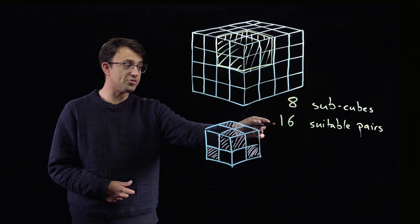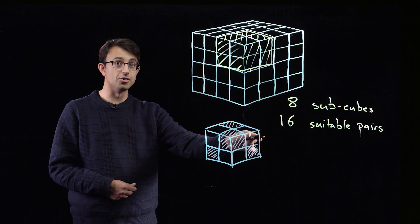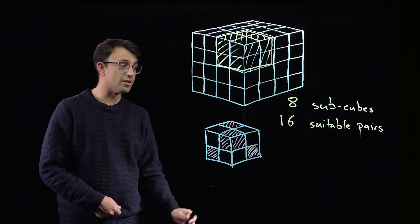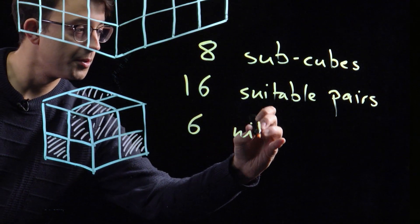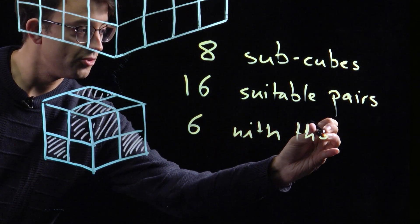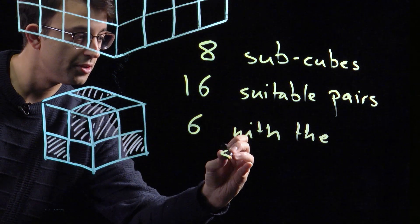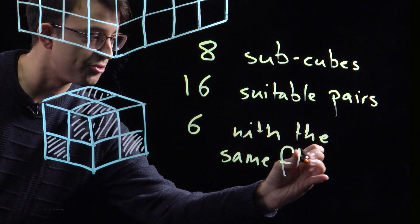But we've got 16 and three flavours. Each pair represents one flavour, and that means there must be at least six pairs that have the right distance,